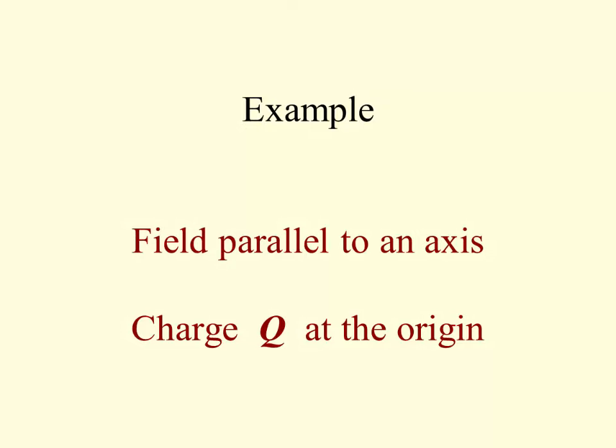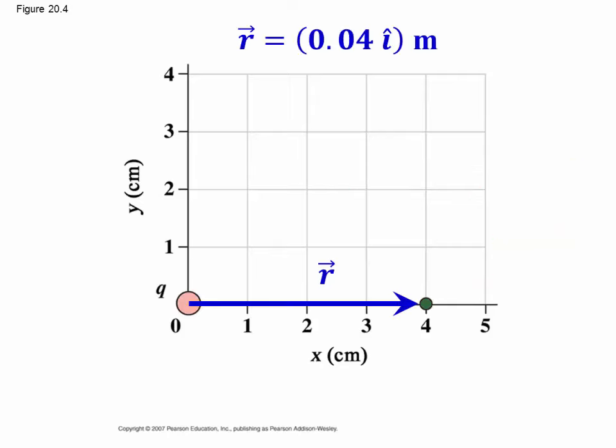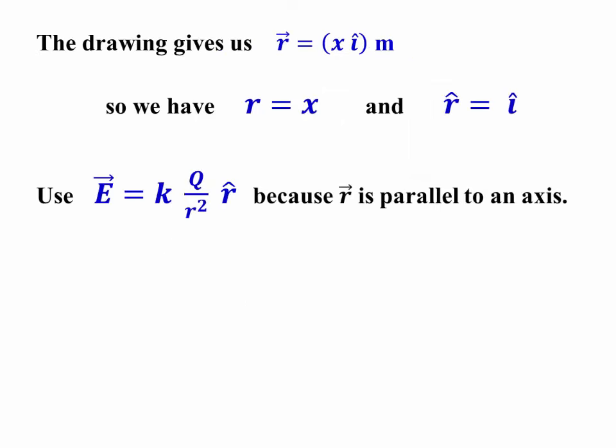First example: when the field is parallel to an axis with the charge at the origin, the place where we want to find E is on the x-axis. So when we draw the r vector, we see that it is parallel to an axis and has a simple expression in terms of a single unit vector. Note that I've converted 4 centimeters to 0.04 meters when doing this. So the drawing gives us the vector r. I'm writing it in general terms as a number x, rather than carrying the numerical values along.